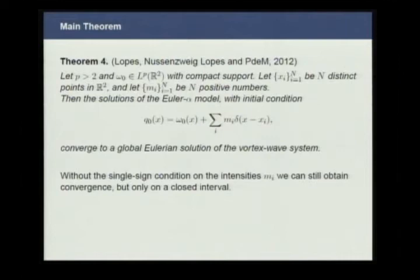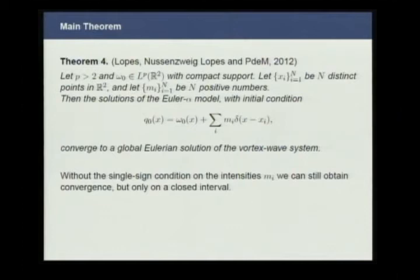A very important result is that using the symmetry properties of K-alpha and the fact that the flow preserves the Lebesgue measure, we can show that a generalized Hamiltonian is conserved in time. This allows us to state our main result: a sequence of solutions of the Euler-alpha model with initial conditions Q0 of this form converge to a global Eulerian solution of the vortex wave system as the regularization parameter alpha tends to zero. If the single-sign condition on intensities M_i does not hold, we only obtain convergence on a closed interval of time.